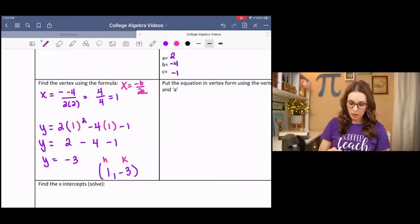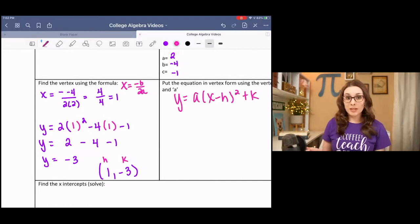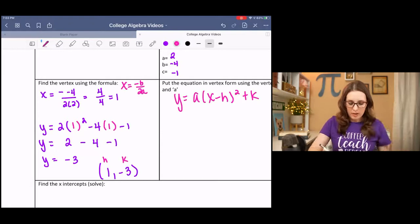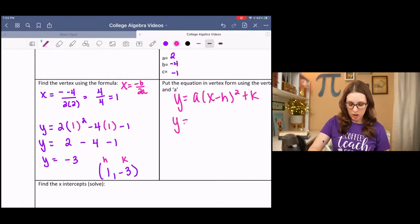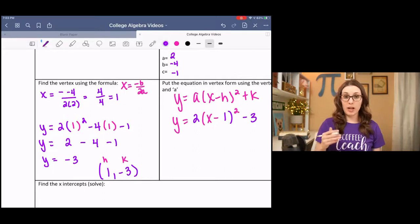Then we can use vertex form and plug in the pieces. Now remember, Y and X stay because we're trying to write the equation. And that means that A changes to 2, H changes to 1, and K changes to negative 3. And that's vertex form. So if it were to ask you for vertex form, this would be done. That's complete, the end.